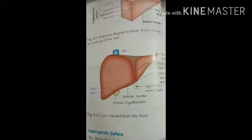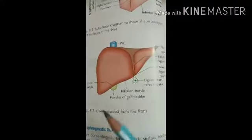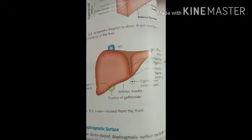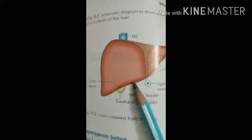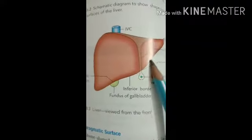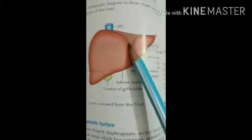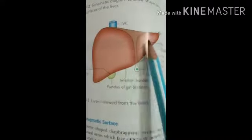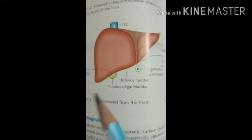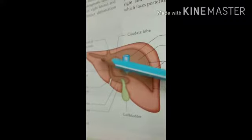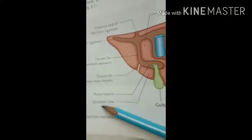The lobes of the liver are classified into two types: anatomical lobes and physiological or functional lobes. For the anatomical lobes, on the diaphragmatic surface, the liver is divided into two lobes — the large right lobe and the small left lobe — by the attachment of the falciform ligament. On the visceral surface, the liver is divided into the large right lobe, the small left lobe, the quadrate lobe, and the caudate lobe.